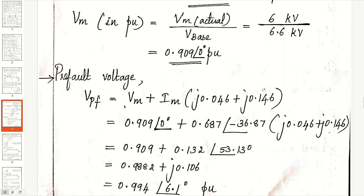The pre-fault voltage VPF equals Vm plus Im times (j0.046 plus j0.146), which gives 0.994 at angle 6.1 degrees per unit. Note: in previous problems with unloaded power systems, VPF was assumed as 1 at angle 0 per unit. But here, since the actual current drawn by the motor is given, you must calculate the pre-fault voltage explicitly.